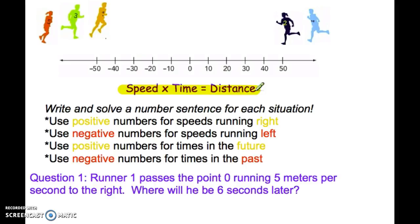We're going to use that concept to help us write and solve a number sentence for each situation. It's going to be really helpful if you obey these guidelines: use positive numbers for speeds running right, negative numbers for speeds running left. You'll be using positive numbers for times in the future and negative numbers for times in the past.